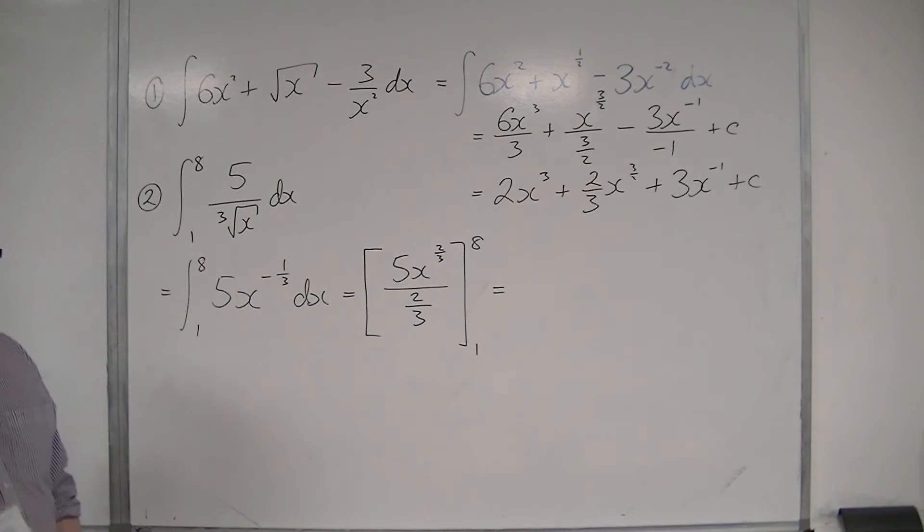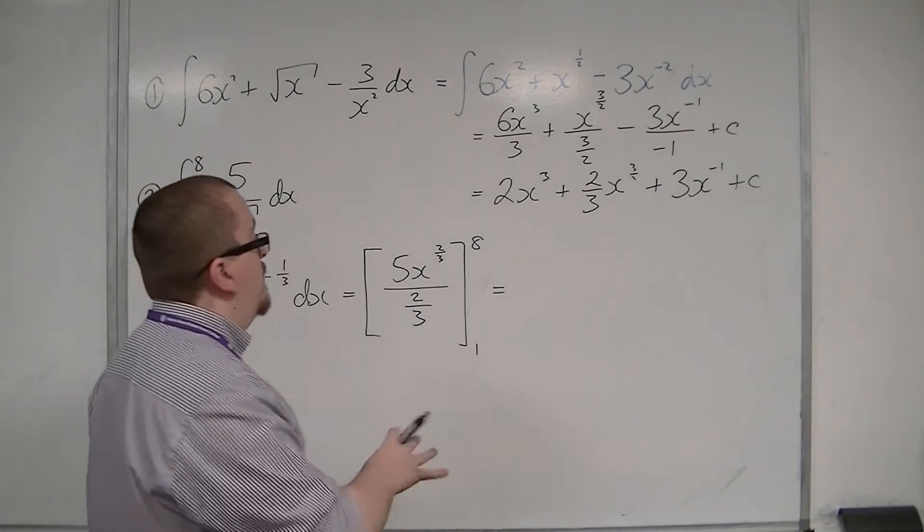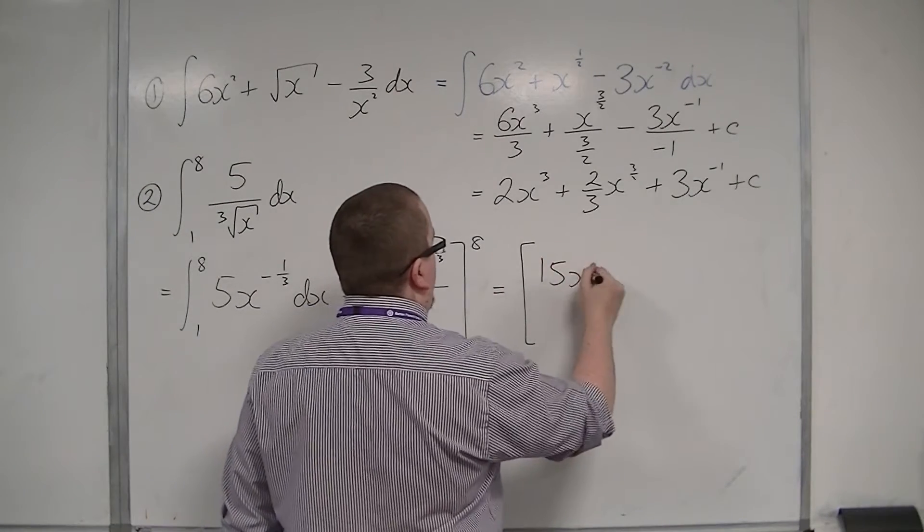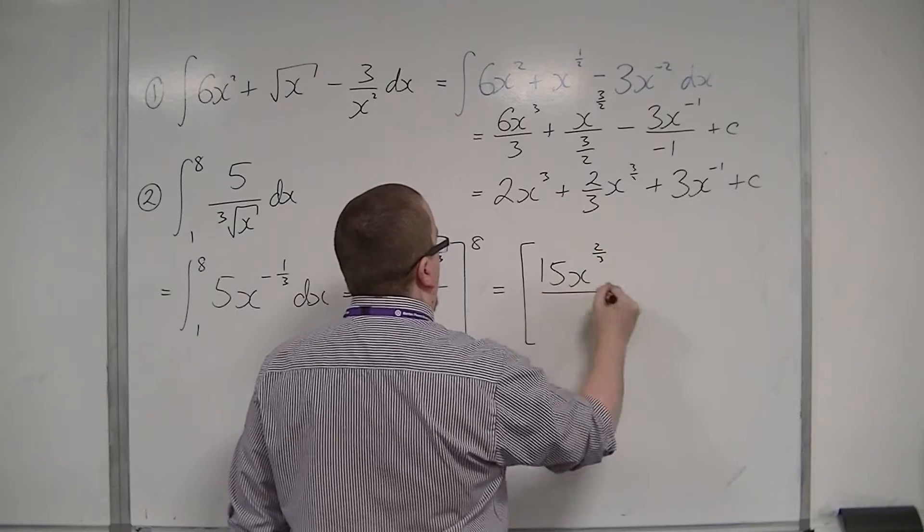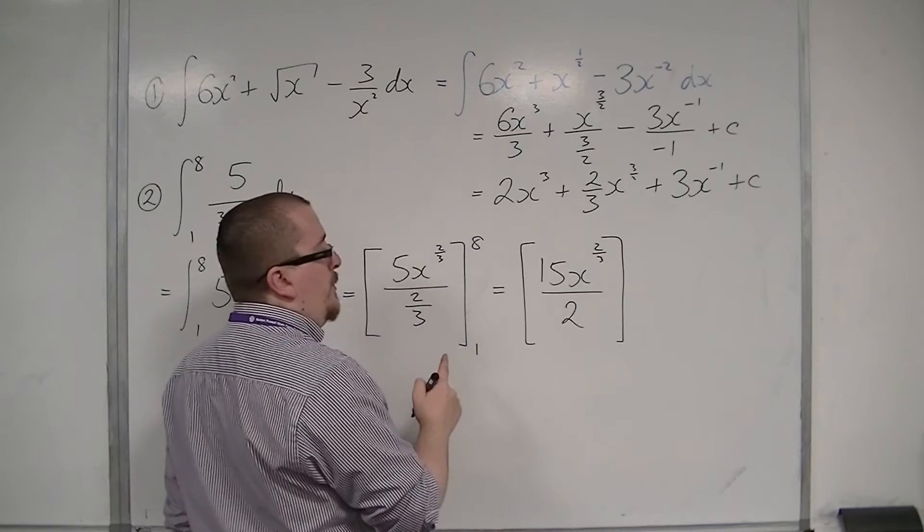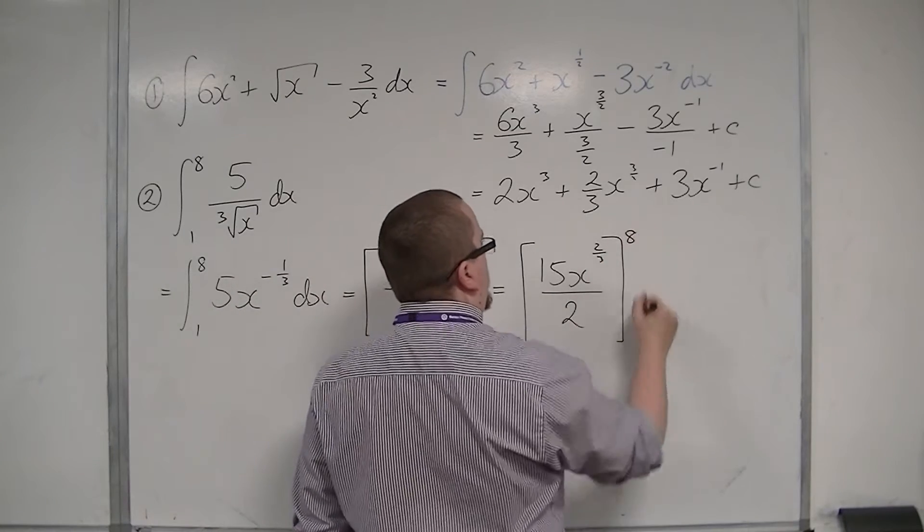Now let's tidy that up. Because dividing by 2 thirds is the same as multiplying by 3 halves, this is 15x to the 2 thirds over 2. That's 5 times 3 halves, evaluated between 8 and 1.